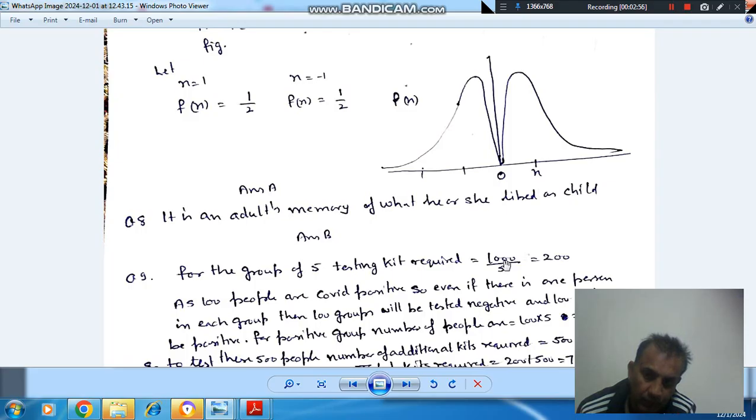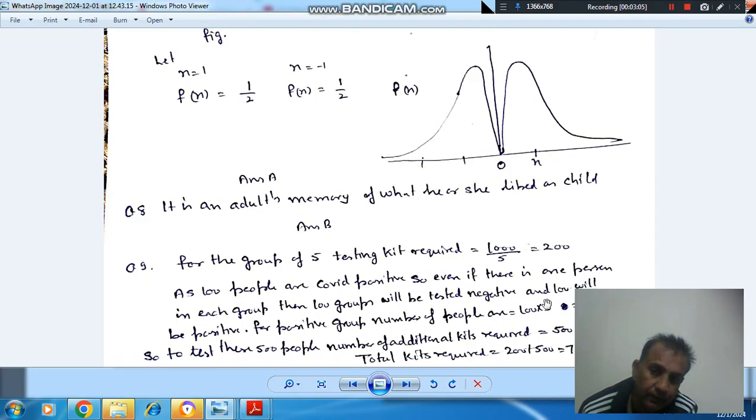Now, here they are tested in groups, so 200 kits are required. For the groups that are COVID positive, all the people are tested individually. So for these 500 people, 500 testing kits are required. Total number of kits is 200 plus 500.